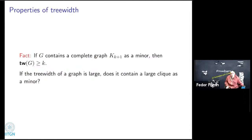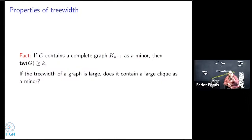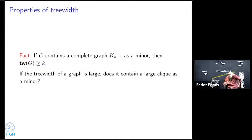Does a large treewidth always imply a large clique minor? The answer is again no — the grid doesn't contain a large clique as a minor, because a grid is a planar graph. And if you delete edges, delete vertices, or contract edges, your graph remains planar. Any planar graph cannot contain a clique on five vertices as a minor — this is the famous Kuratowski theorem. So the statement that large treewidth implies a large clique minor is not true.